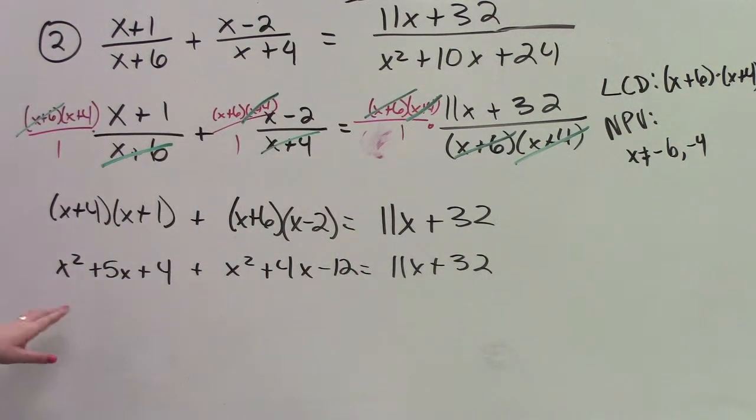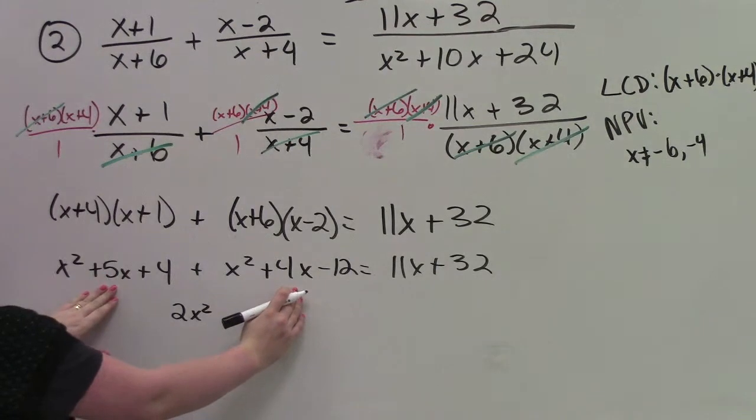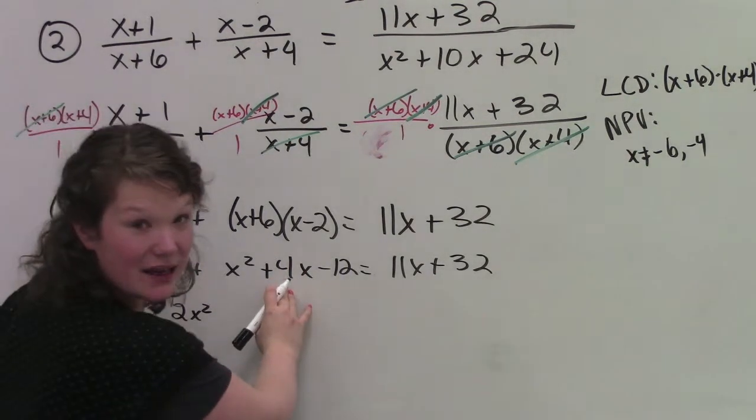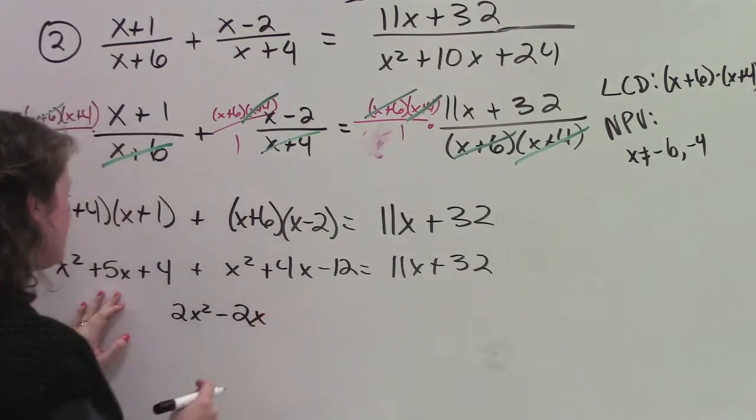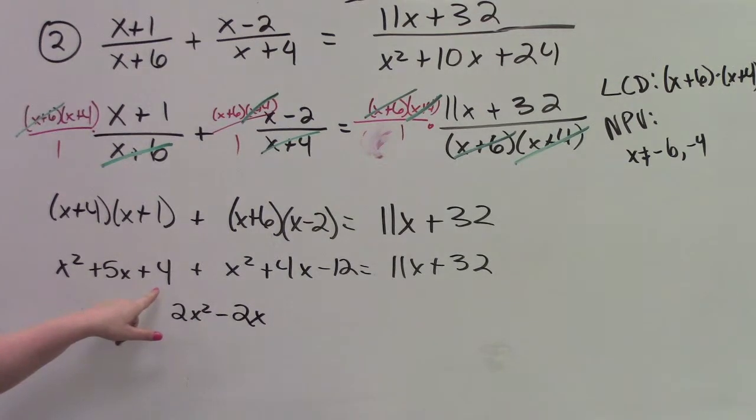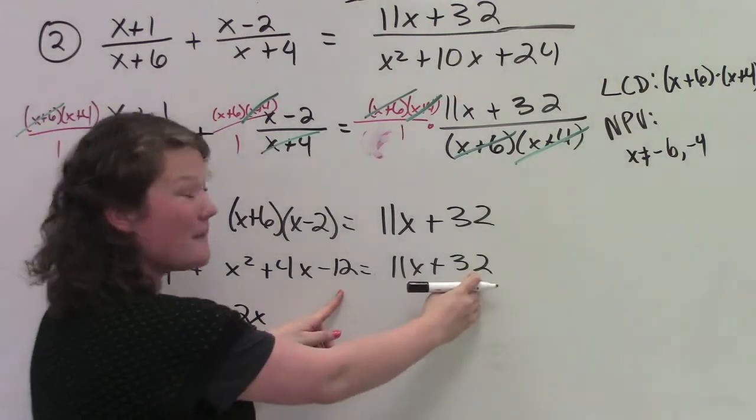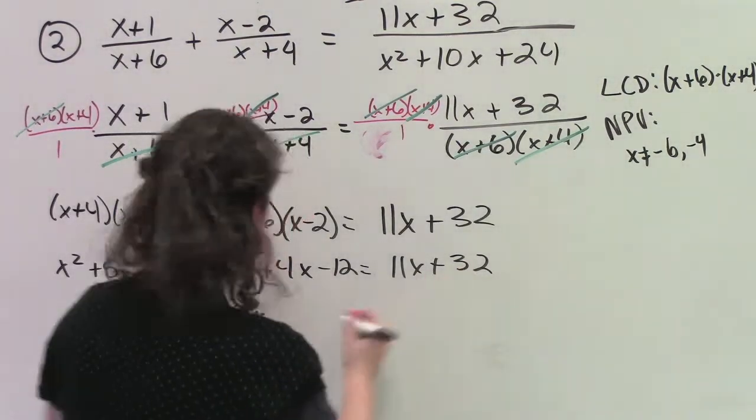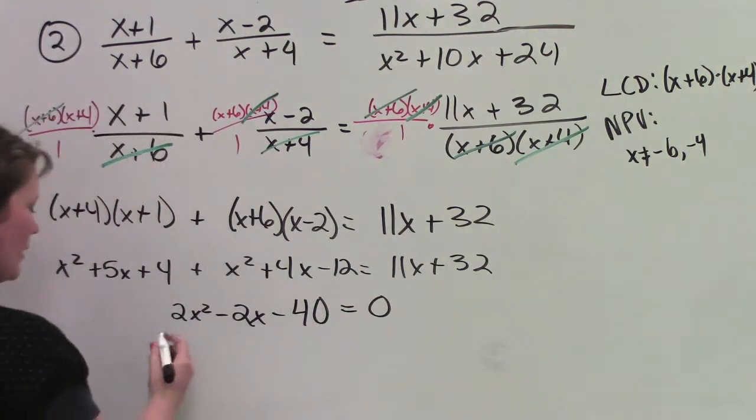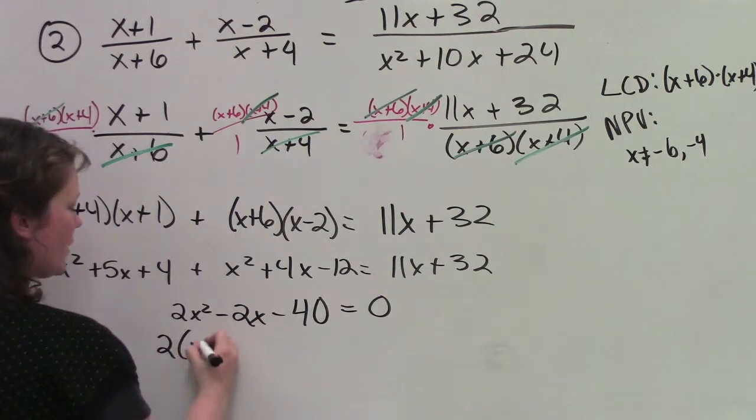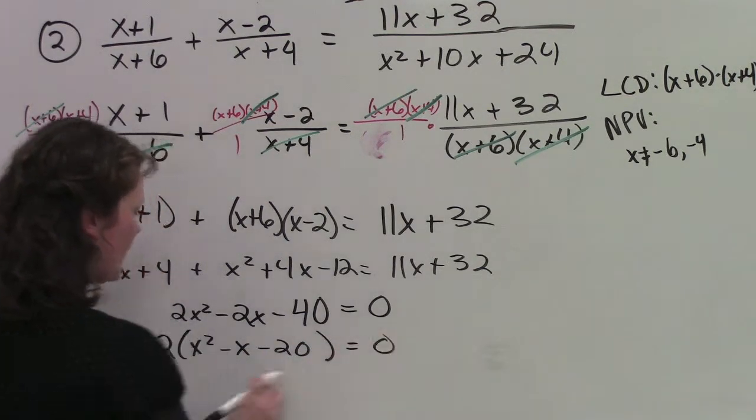Now I'm going to collect my like terms. x squared plus 5x plus 4x is 9x minus 11x is negative 2x. 4 minus 12 is negative 8 minus 32 is going to be negative 40, equaling 0. I can factor out 2 from all these terms. So 2 times x squared minus x minus 20 equals 0. I can factor this.